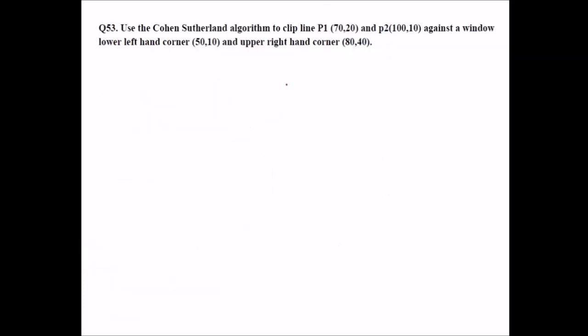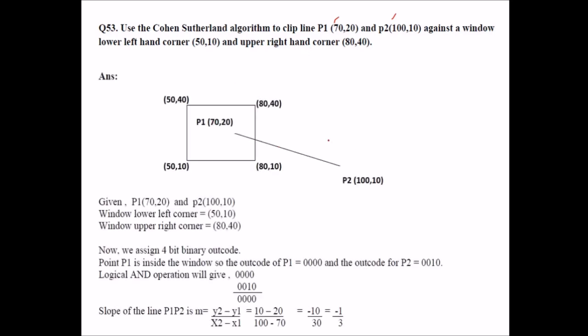Now we have to use the Cohen-Sutherland algorithm to clip a line, which is given by these two points, against a window with lower left hand corner 50, 10, and upper right hand corner 80, 40. So this is the line, these are the corners which have been given. So let us make it first, this is our 50, 10 and this is our 80, 40. This is the window actually.